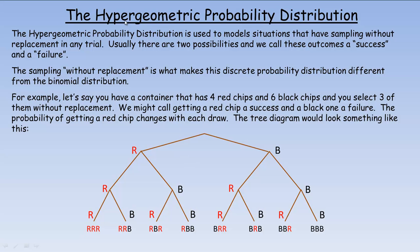In this tutorial, we're going to take a look at the hypergeometric probability distribution. The hypergeometric probability distribution is used to model situations that have sampling without replacement. Usually there are two possibilities — we call these outcomes either a success or a failure. Sampling without replacement is what makes this discrete probability distribution different from a binomial.